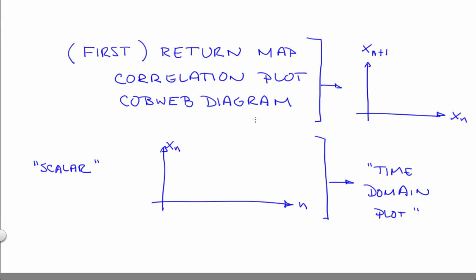The return map is useful because it brings out the correlations between successive points, hence the alternate correlation plot name. First, in parentheses there, is because of this 1. You could also plot a second return map if you plotted xn+2. You might do that if you were interested in figuring out whether there was some sort of important two-time click correlation going on in your data.